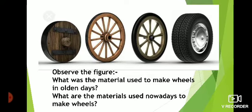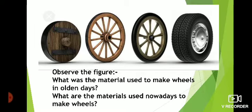Please watch the transformation of wheels from olden times till today. You can see four pictures here — our wheel has changed; its structure, its material, everything changed. Observe the figures. What was the material used to make wheels in olden times? From the picture you can see it was wood. What are the materials used nowadays to make wheels? Nowadays we use steel, rubber, iron, etc.